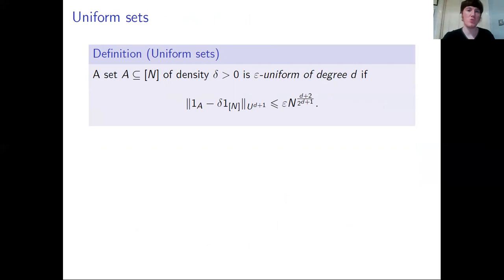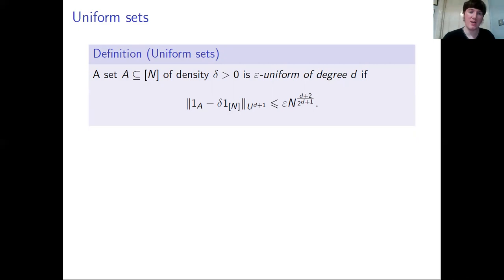Now we can look at sets which are close to random. We say that a set A of density delta is epsilon-uniform of degree d if the difference between the indicator function of A and the function delta·1_n in the Gowers U^{d+1} norm is at most epsilon times a normalising power of n. This is saying that A is within epsilon of being truly random, truly uniform, or truly equidistributed in some sense.